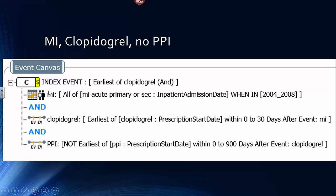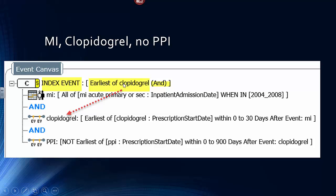Here's your index date, and here are your three conditions: heart attack in 2004 to 2008, clopidogrel within 0 to 30 days after the heart attack, and no PPI 0 to 900 days after the clopidogrel. This is a group of patients who are on clopidogrel with no PPI, and the index date looks for the clopidogrel event to establish the date-time. The index event line points directly to clopidogrel, and it says: when you find the patients that qualify, attach to them the date of the first clopidogrel, because that is the point from which we will measure elapsed time.